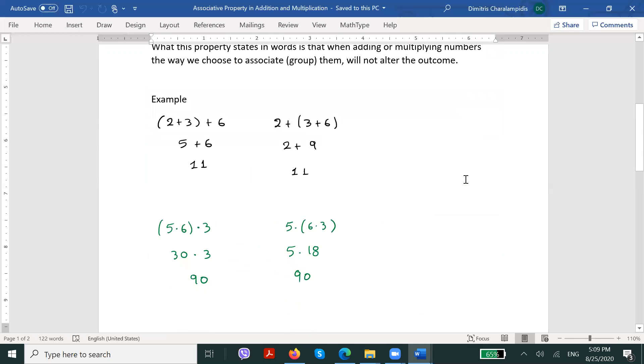For example, if we need to add 2+3+6, either I group 2 and 3 together and then to that result, which would be 5, add 6, or if I group 3 and 6 together and then to that result, which would be 9, add 2. I would still get the same result of 11 in both cases.